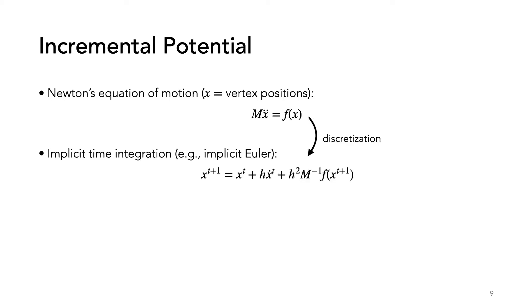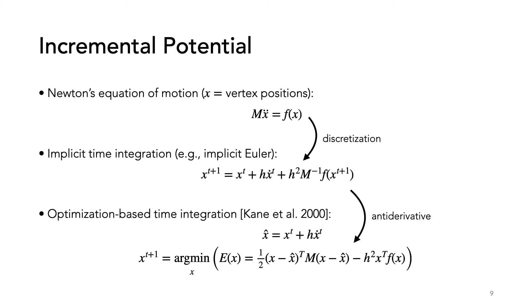To understand how IPC works, let me define what an incremental potential is. If we start from Newton's equation of motion, f equals ma, we can discretize using implicit integration. We then transform the root-finding problem into a minimization where our objective is the antiderivative of our implicit integration. This objective function is known as an incremental potential, IP.